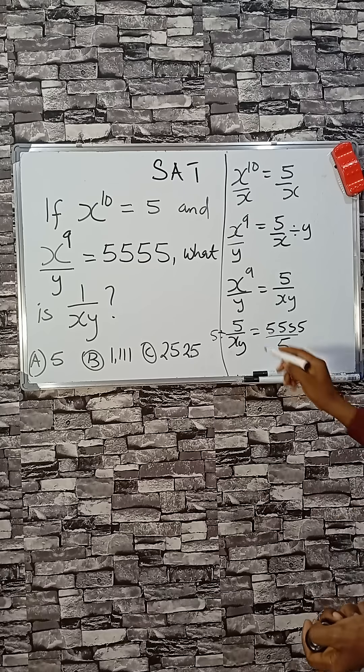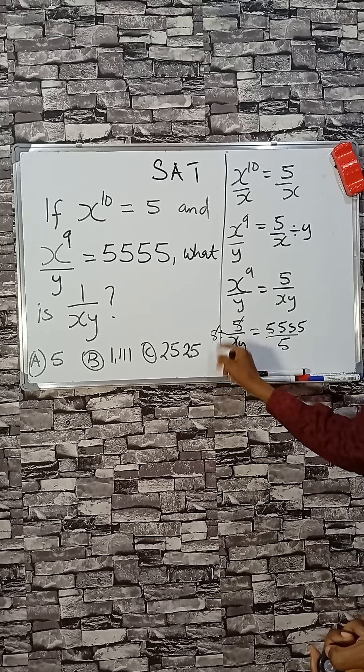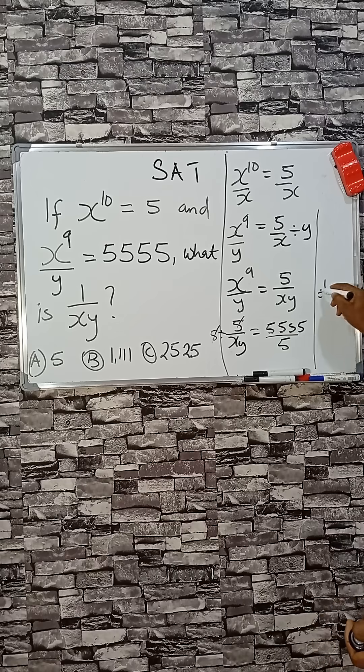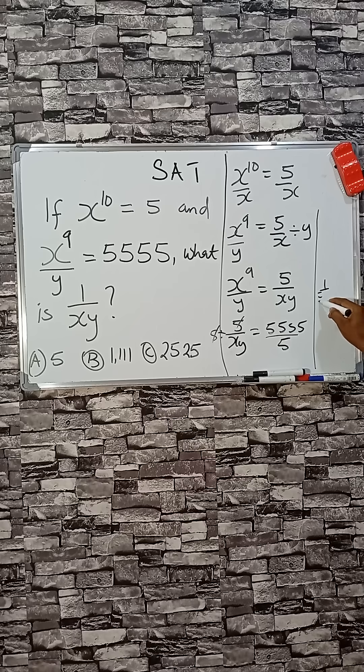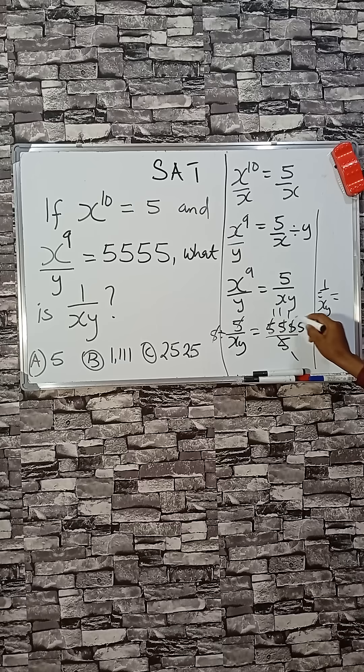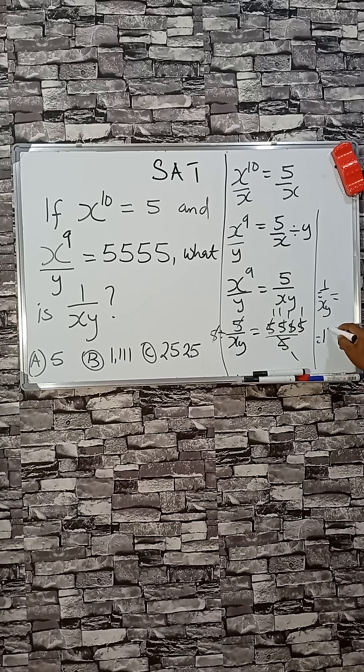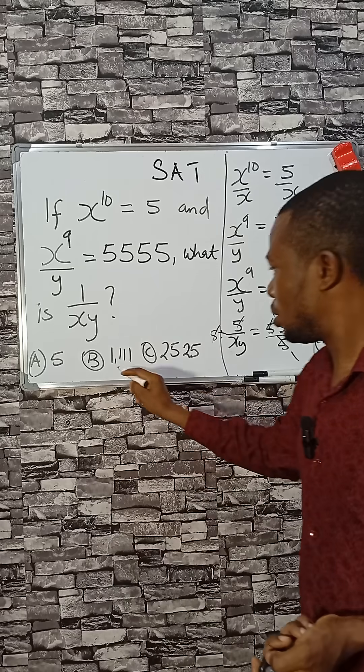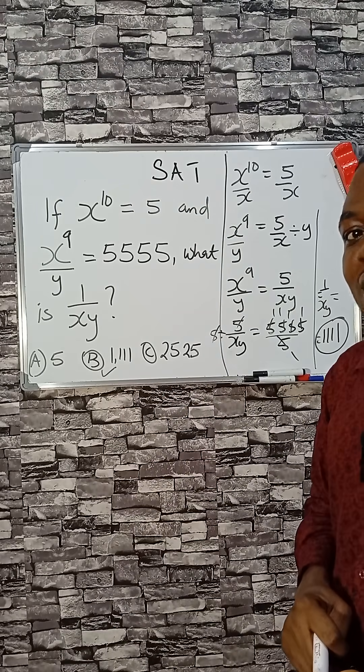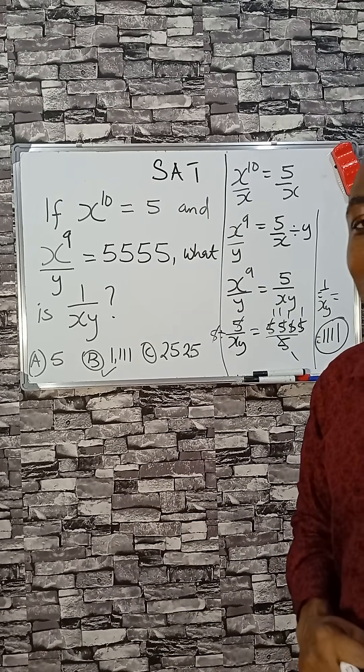Very simple. This will cancel this, giving you 1 over xy. And then if you divide this, this will be 1, which is option B. So very simple. For more of SAT X, subscribe to this channel. Bye.